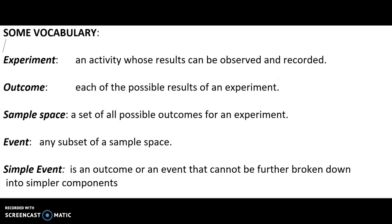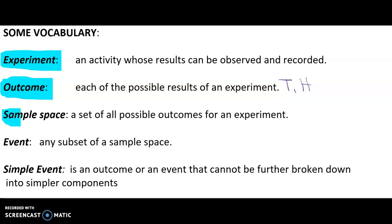First we have an experiment — simply an activity whose result can be observed or recorded. It could be the time it takes for you to run around a track, it could be flipping a coin, rolling a die, anything like that is an experiment. Next we have outcomes — each of the possible results of your experiment. So if we go back to flipping a coin, you could get a tail or it could land on heads; those are the outcomes.